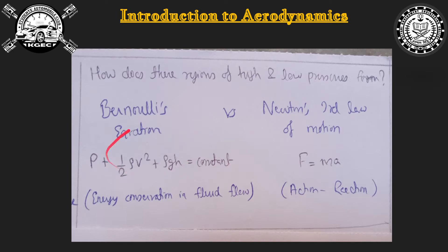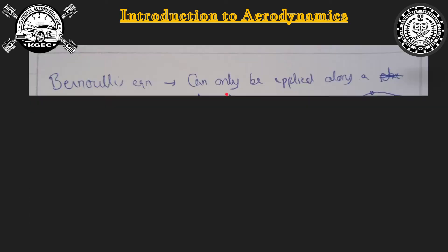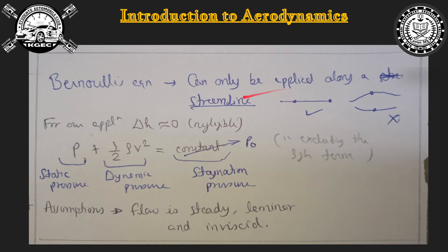Bernoulli's equation is still a very powerful equation in fluid flow. Bernoulli's equation can be applied only along a streamline. You can apply it at two points on the same streamline, but you cannot apply it across two different streamlines — you cannot say that P plus half rho v squared at one streamline equals P plus half rho v squared at another streamline. It is valid along one streamline only.